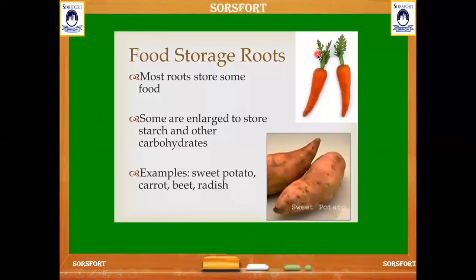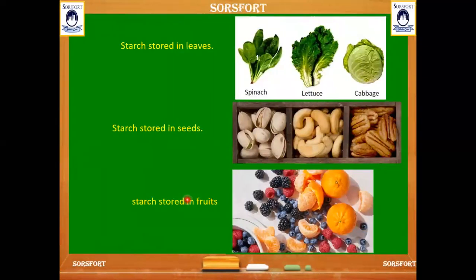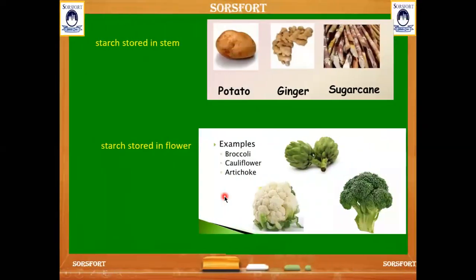When we eat fruits, vegetables, nuts, rice, wheat, or potato, we are actually eating food that the plant prepared for its own use but stored as excess starch. Roots that store starch include carrots, beetroot, sweet potato, and radish. Leaves that store starch which we eat include spinach and cabbage. Seeds we use that contain starch include pistachios, cashew nuts, and walnuts. All fruits we eat are also the starch part of the plant.